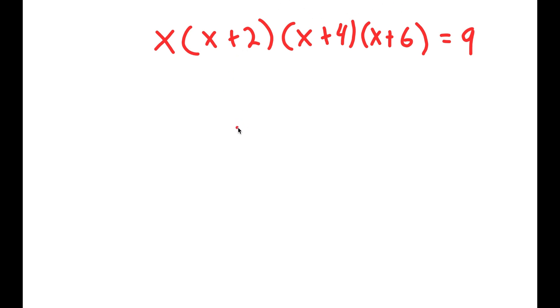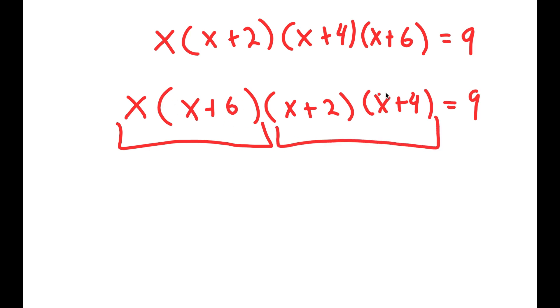To solve this, I'm going to start by reordering it. I'll write it as x times (x+6) times (x+2) times (x+4) equals 9. The reason I'm doing this is because I'm going to multiply x with (x+6) and (x+2) with (x+4).